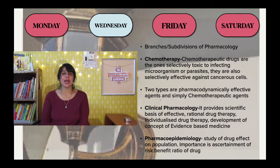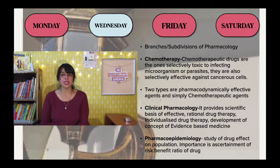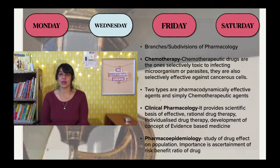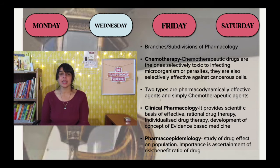On the same Wednesday, I covered another episode on branches of pharmacology, starting with chemotherapy. Chemotherapy was initially known as the study of substances used for eradication of infecting organisms or parasites, but now it has broadened — chemotherapeutic agents also cover cancer agents. Broadly, they can be pharmacodynamically active agents or simply chemotherapeutic agents.